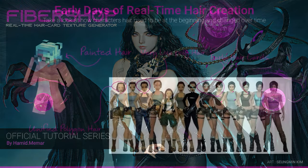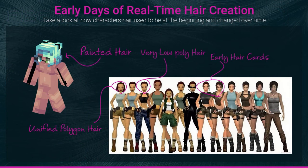At the early stage of computer graphics, graphic processors — which we know as GPUs — weren't that strong and fast as they are today. So game artists were forced to use some methods to represent the hairs of characters. The first technique they came up with was to make character hairs using vertex painting or texture painting the hair over the model.